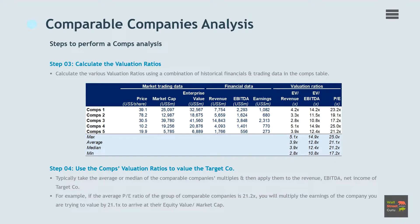For example, if the average P/E ratio of the group of comparable companies is 21 times, then the analyst will multiply the earnings of the company they are trying to value by 21 times to arrive at their equity value.